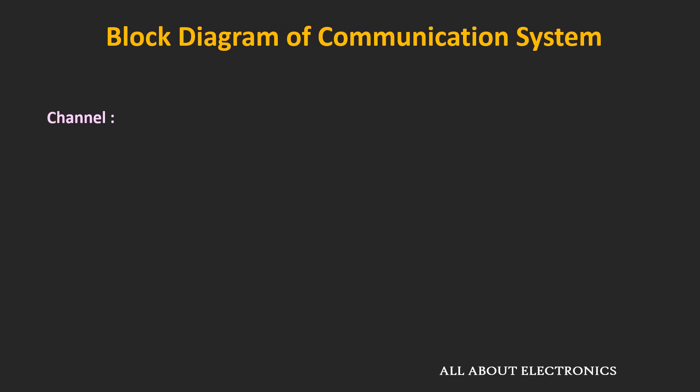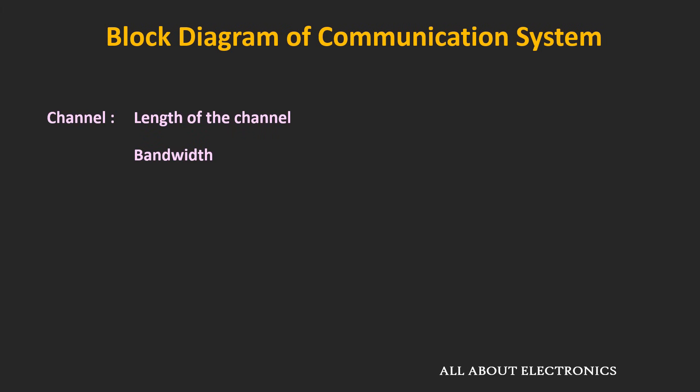From a transmitting medium or channel perspective, the important specifications are: first, the length of the channel — the distance over which the signal can be transmitted faithfully. Another important specification is the bandwidth of the channel, which is the range of frequencies supported by the channel with reasonable fidelity. For example, if a channel can transmit signals in the range of 0–20 kHz, then the bandwidth is 20 kHz. For digital signals, the maximum supported data rate by the channel is also an important aspect.